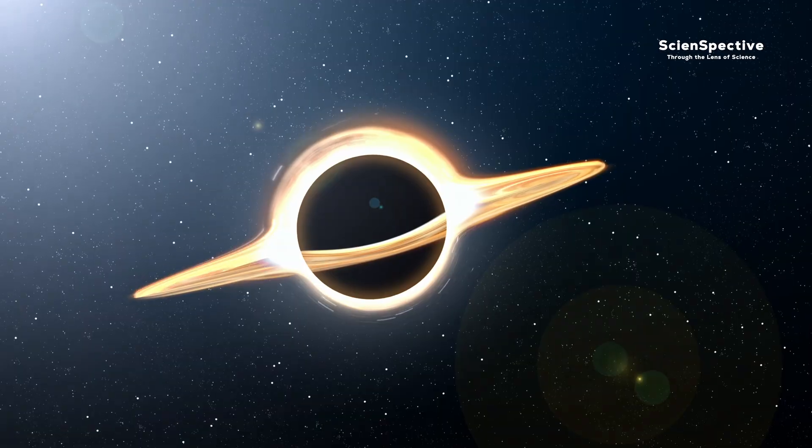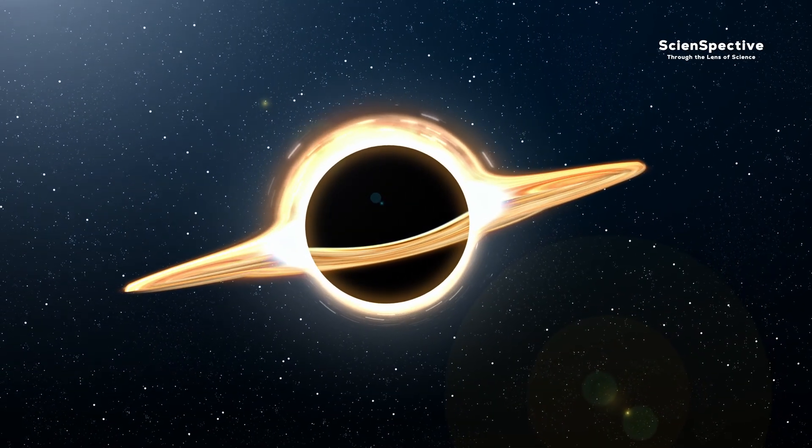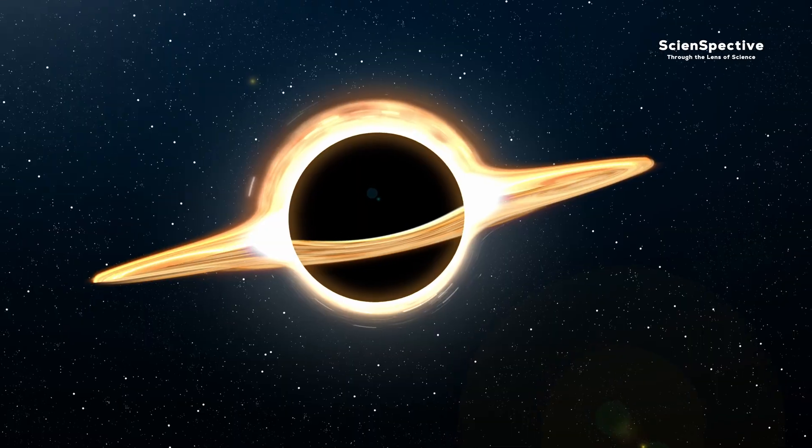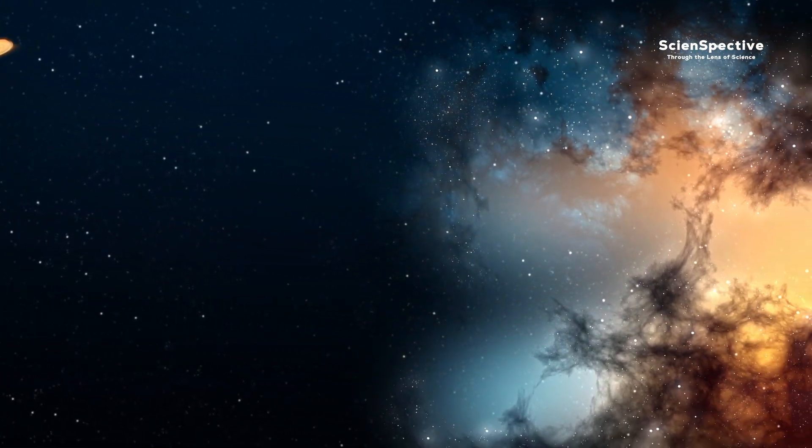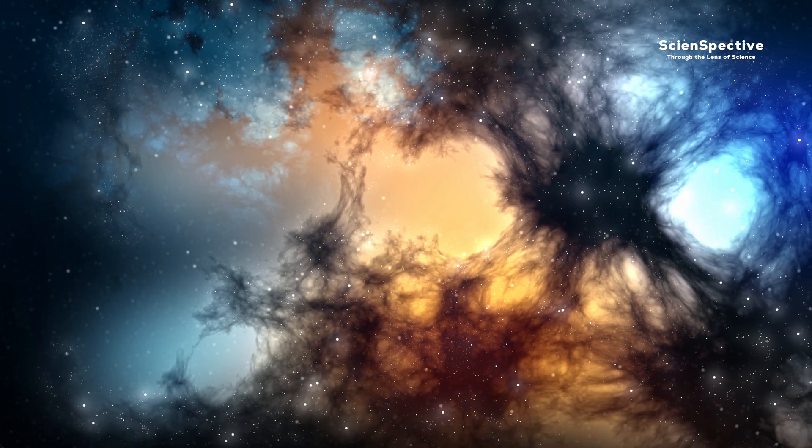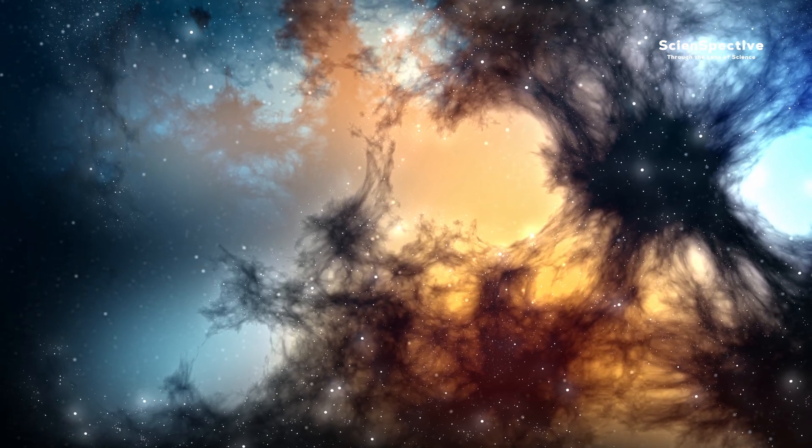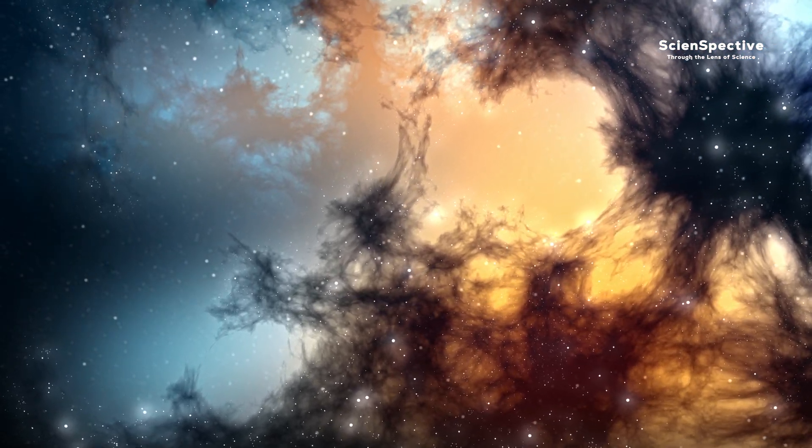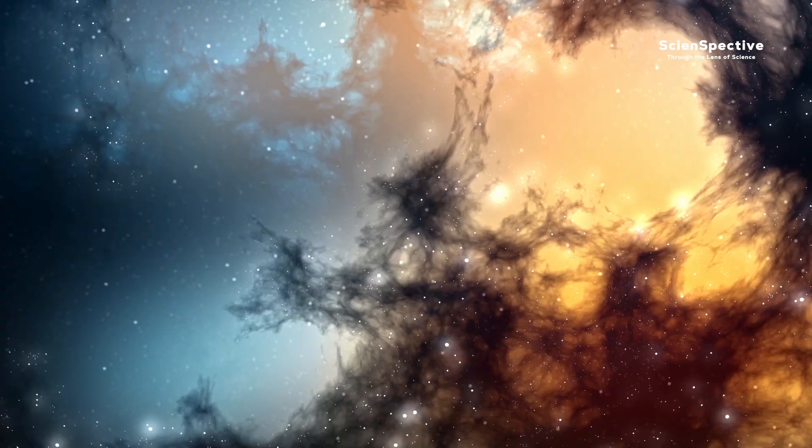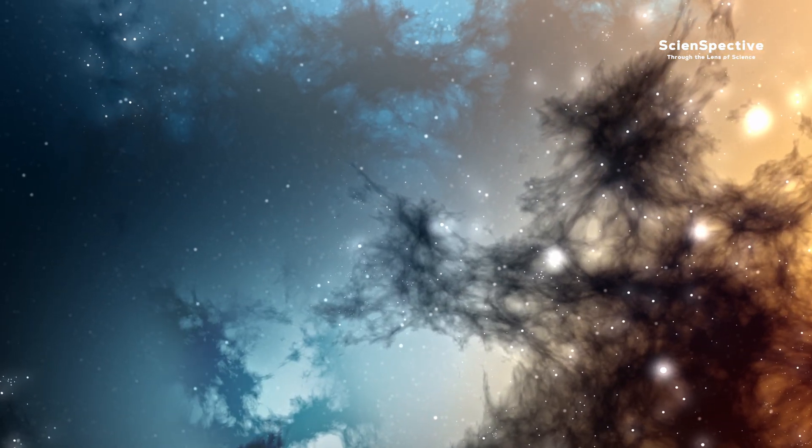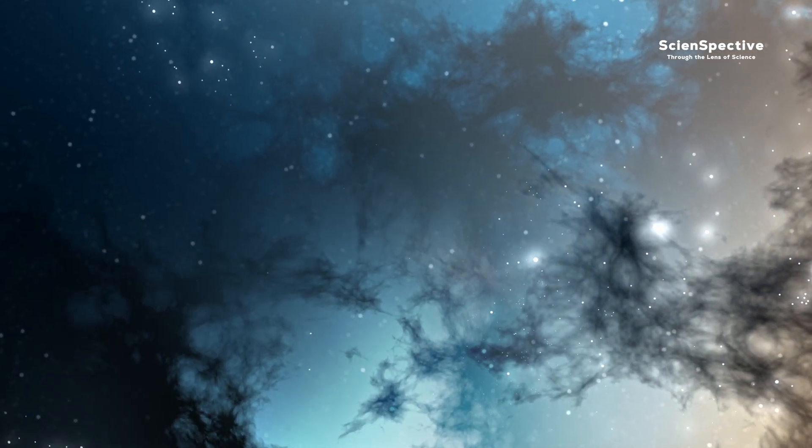To understand what a black hole is and how it forms, we first need a general understanding of a star's life cycle. Stars form when a large amount of gas, mostly hydrogen, collapses under its own gravity. The nucleus of a hydrogen atom consists of a single proton. When atomic nuclei get close to each other, their positive charges repel them from one another.